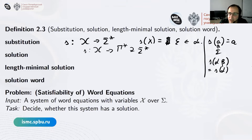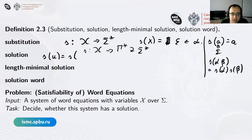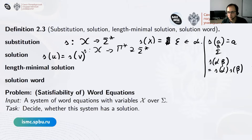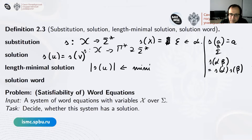The substitution s is a solution of a word equation if s(u) equals s(v). That is the natural definition. The length-minimal solution is the one which minimizes the total length of the obtained string. This does not necessarily imply it's a unique solution — there can be many length-minimal solutions in general.